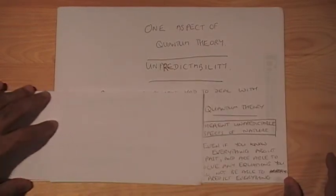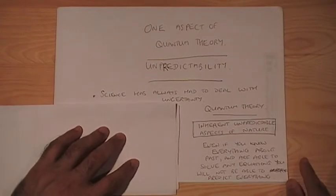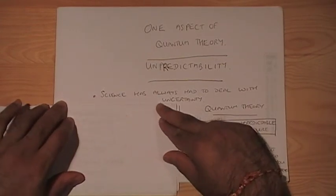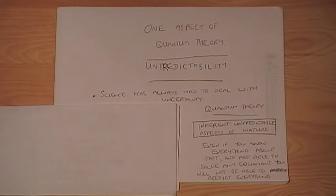But then quantum theory came along at the beginning of the 20th century and it differed from all previous theories in that quantum theory claims that there is inherent unpredictability in aspects of nature.